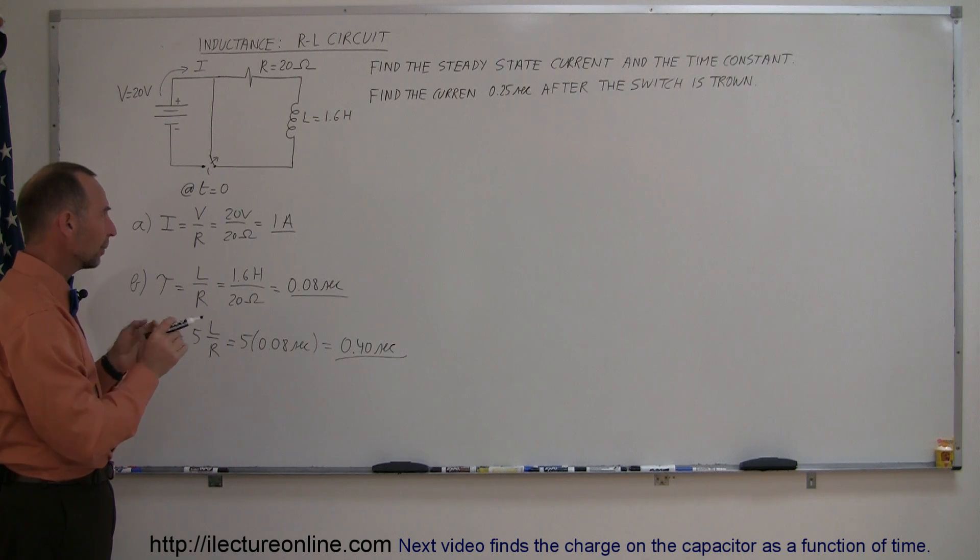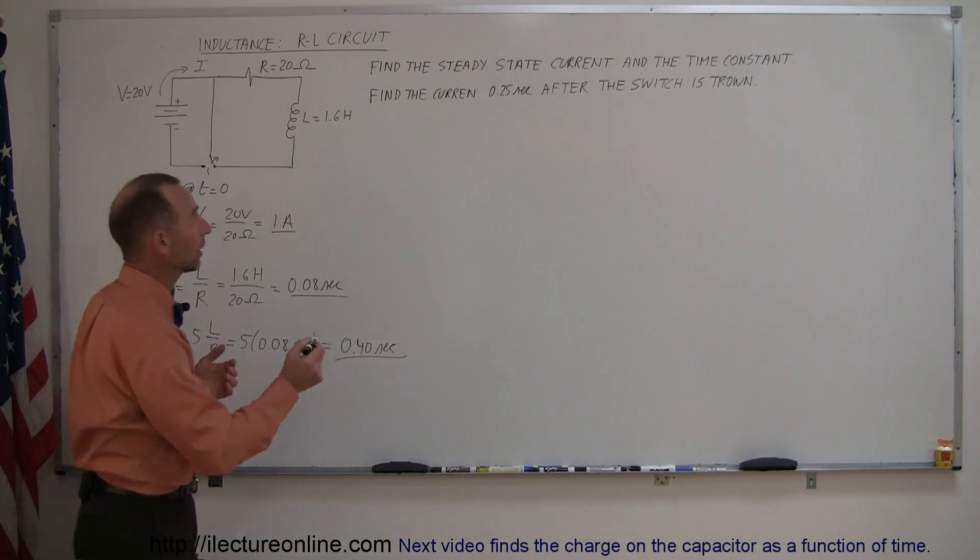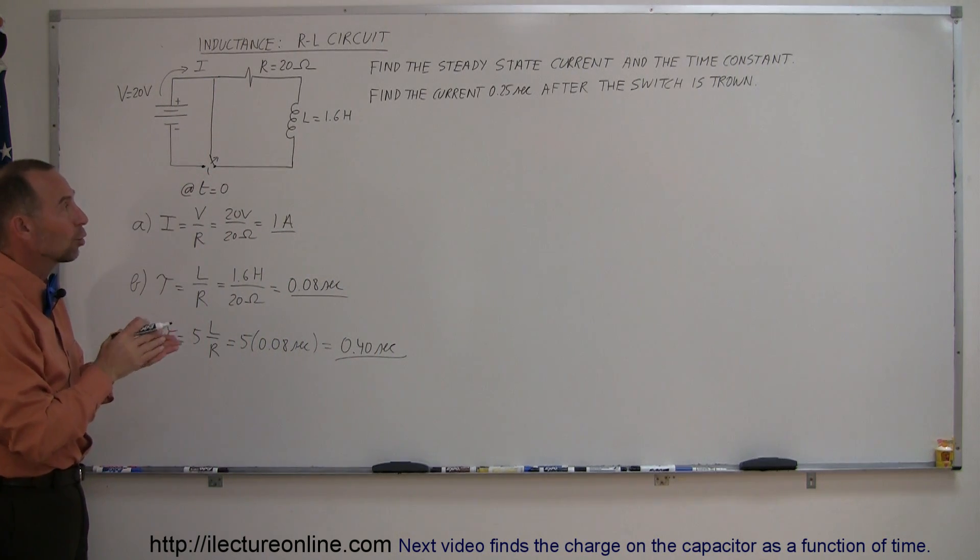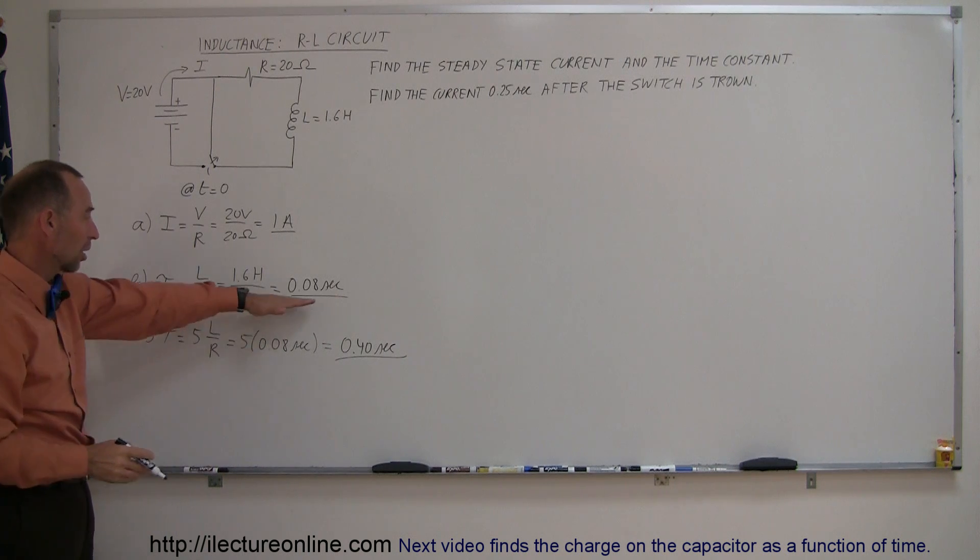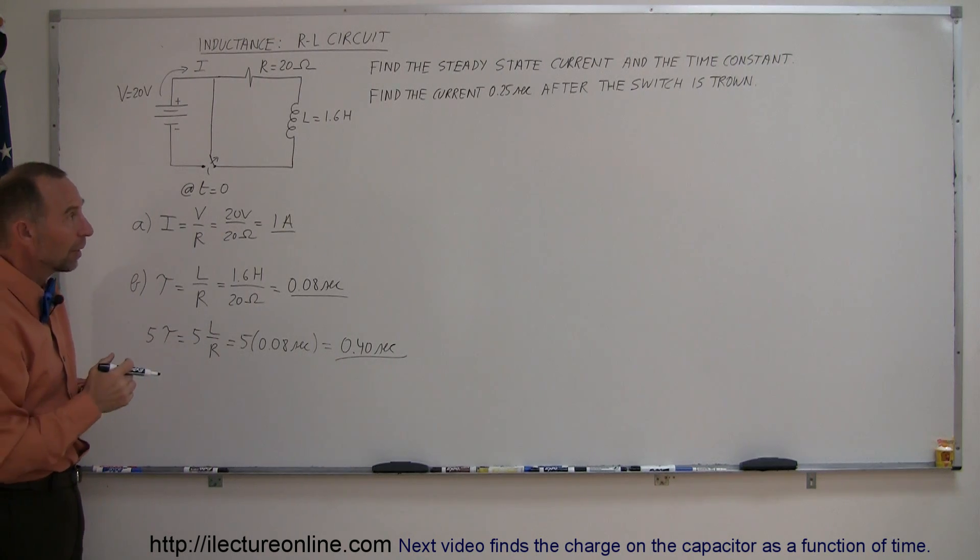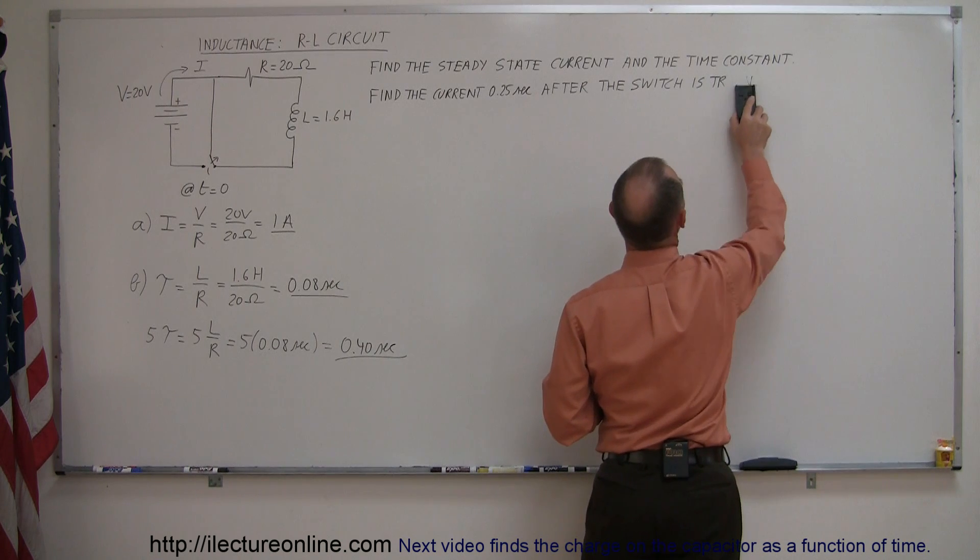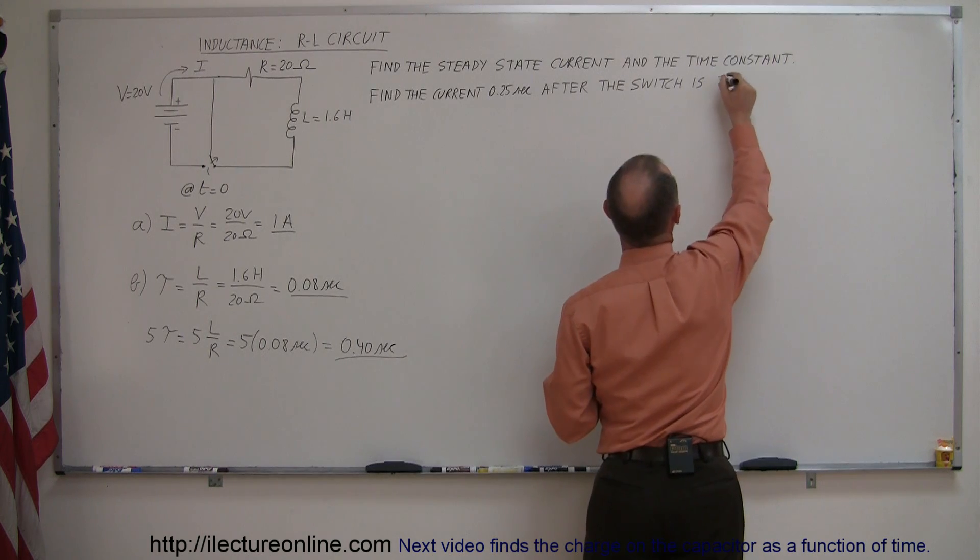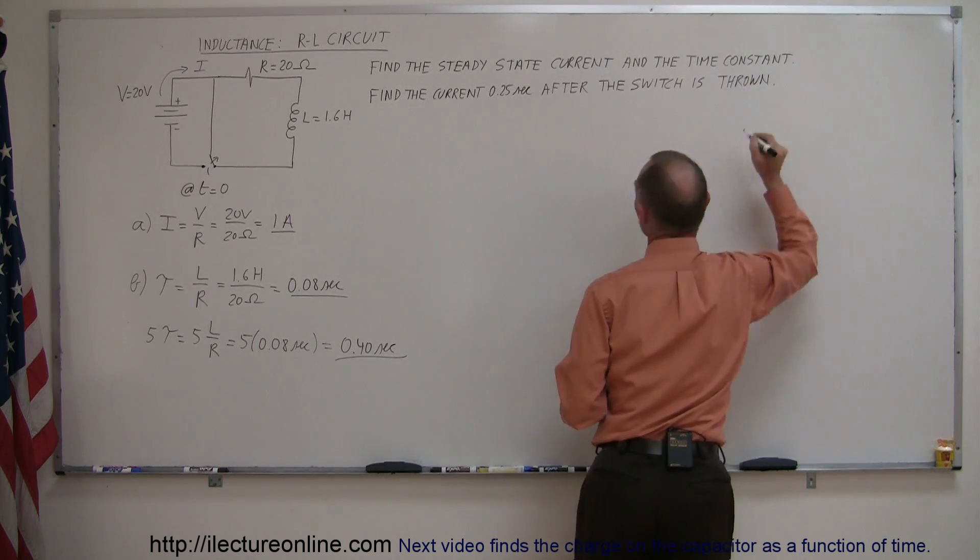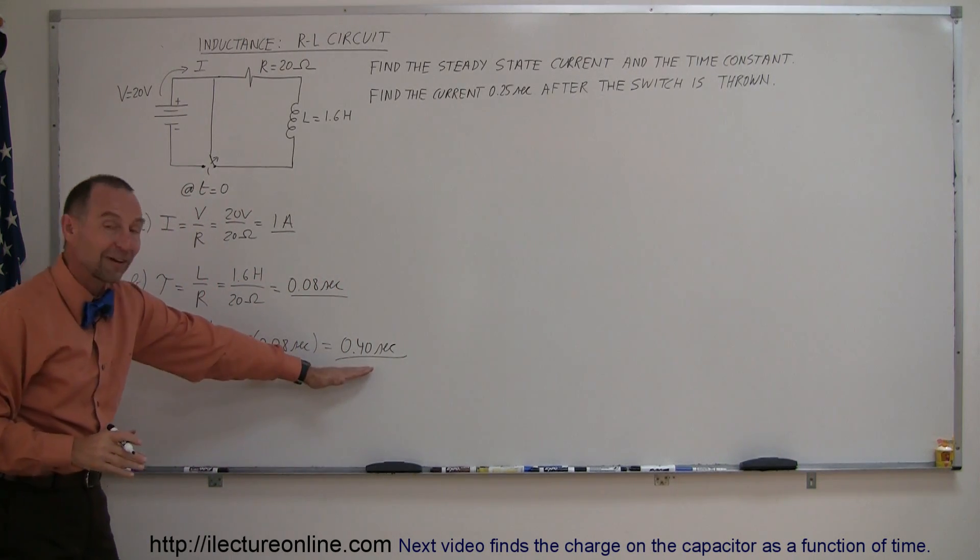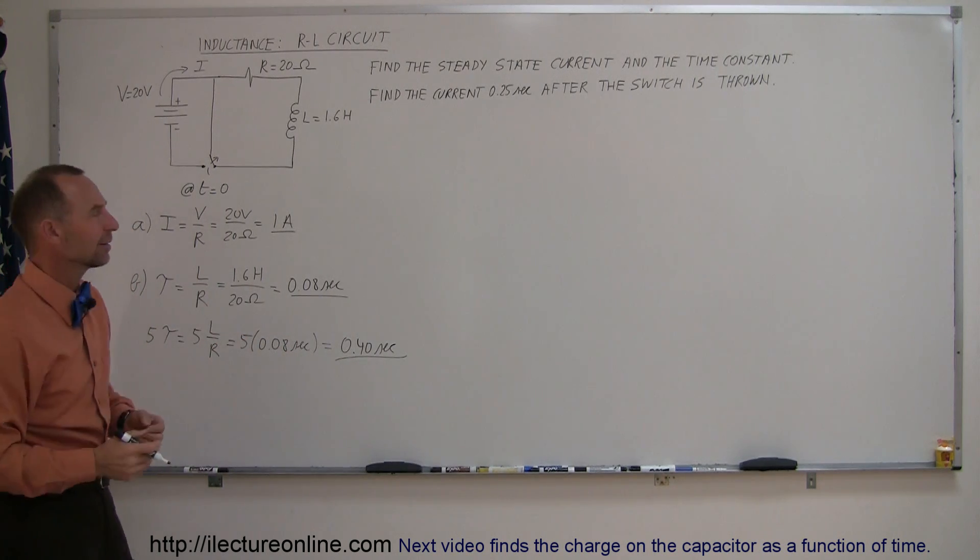The inductor keeps the current going for about another 0.4 of a second. Now if someone wants to know what is the current in the circuit a quarter of a second after the switch is thrown, which is definitely longer than one time constant but not as long as five time constants, there will be still some current flowing. After 0.25 seconds which is less than five time constants there's still some current flowing and how do you find that current?